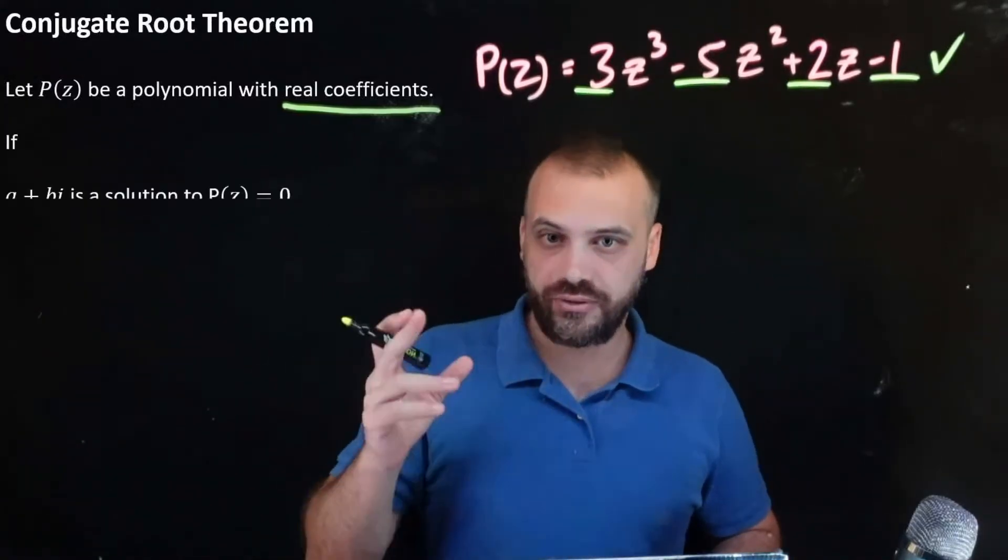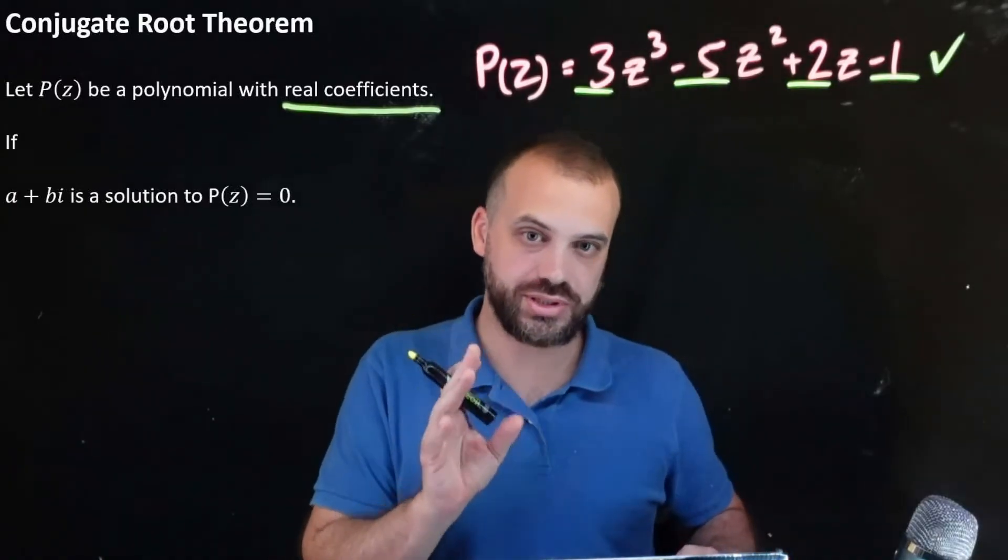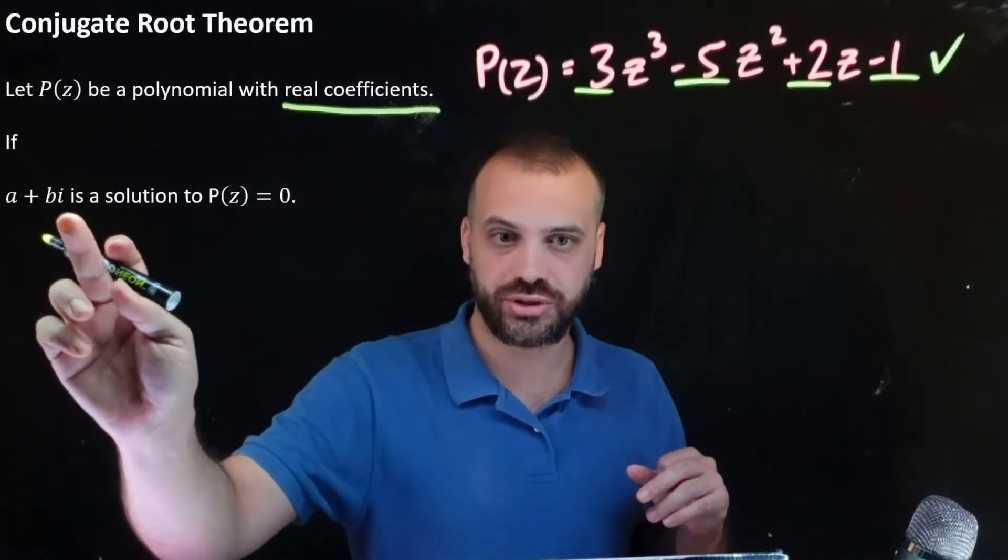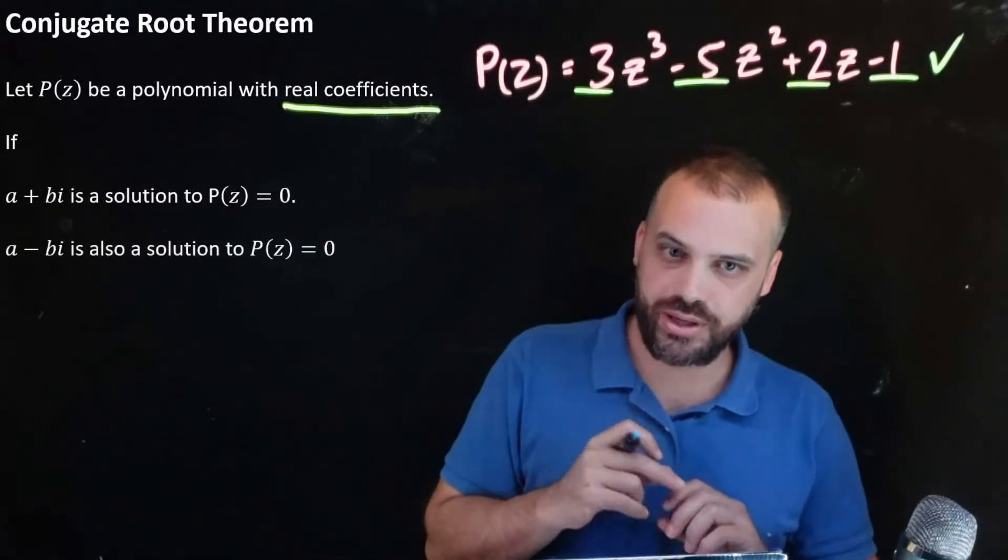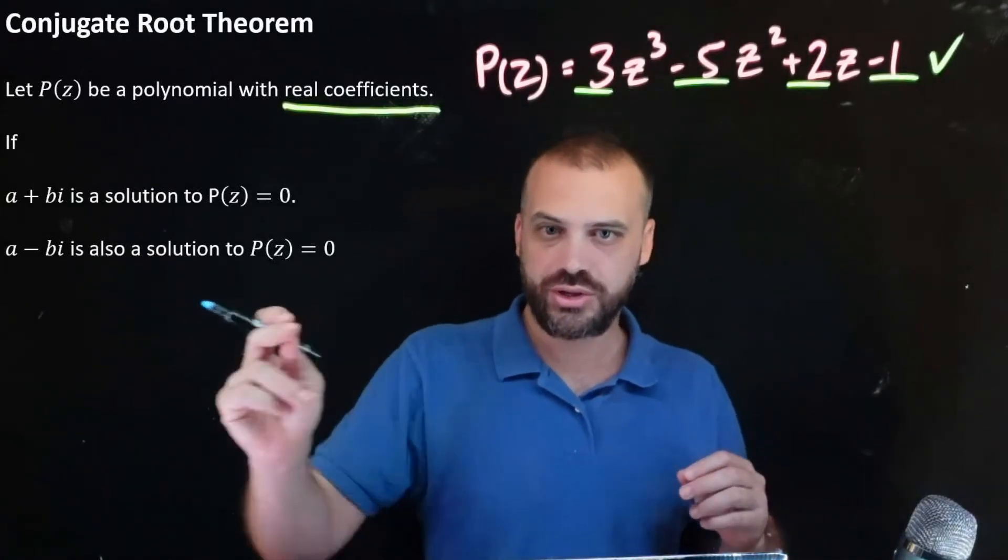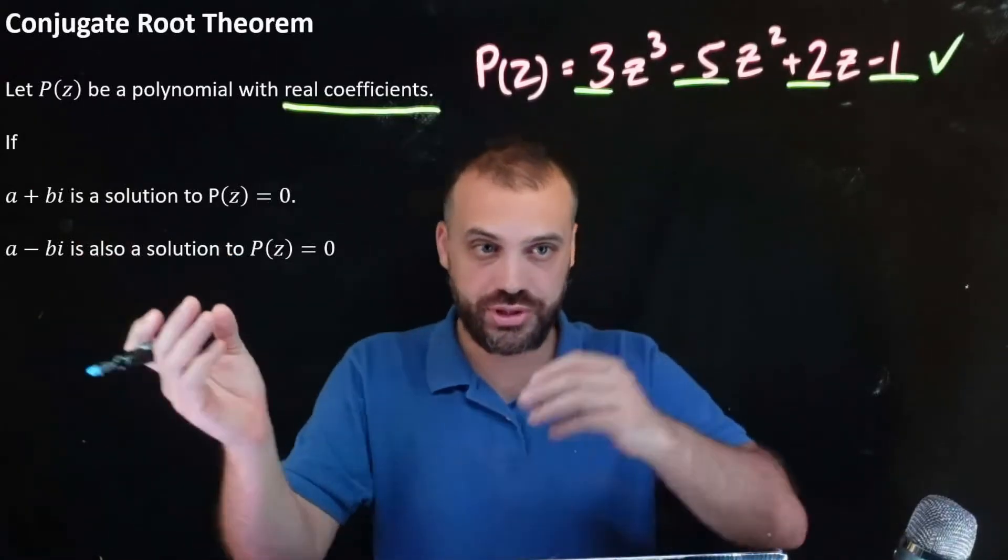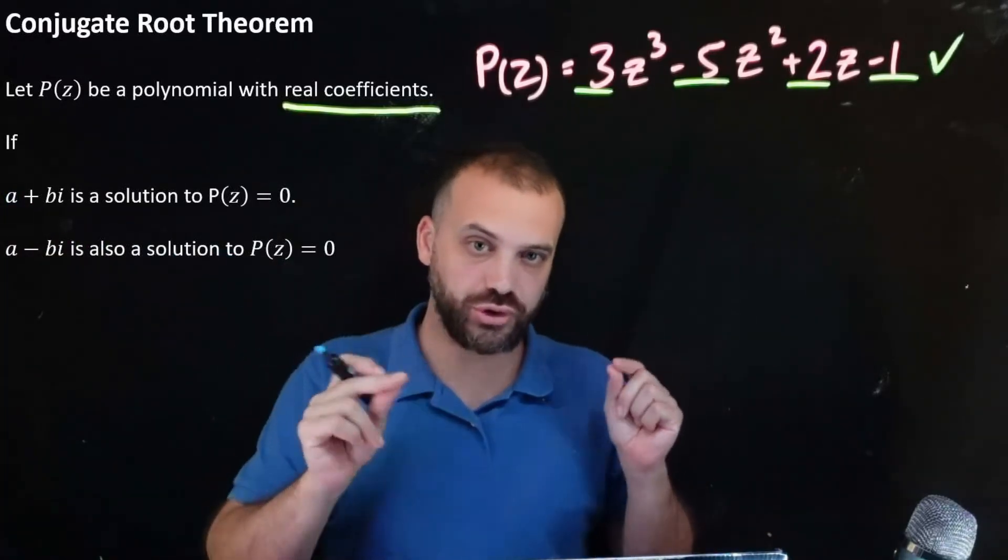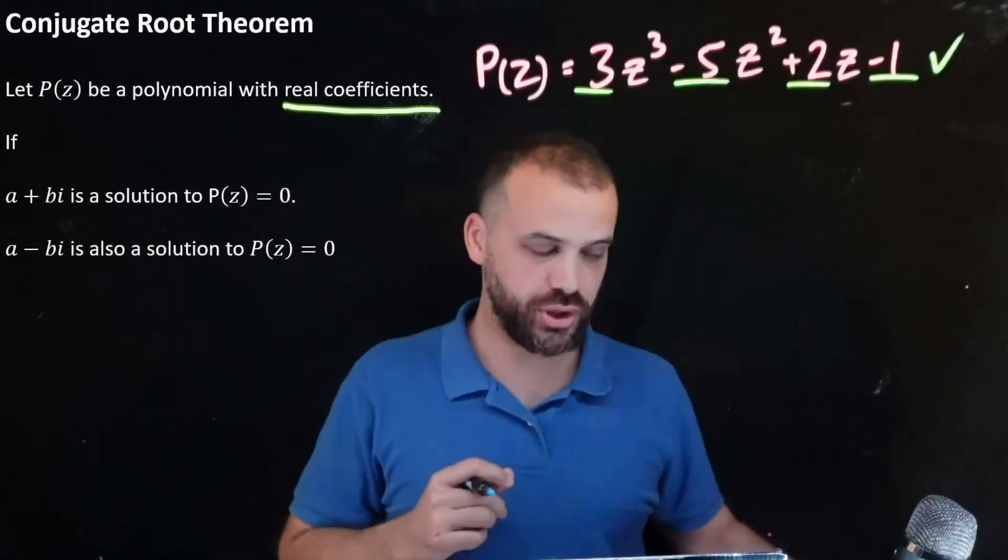So if a plus bi is a solution to P(z) equals zero, so if you have a complex solution to a polynomial, then a minus bi is also a solution to P(z) equals zero. So conjugate root theorem means that if we have complex roots given this real coefficient thing, then we're going to get a pair of conjugate roots. Always a pair of conjugate roots when you have a polynomial with real coefficients.